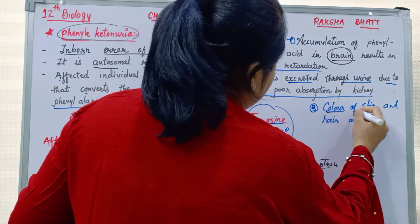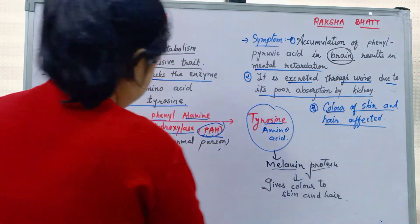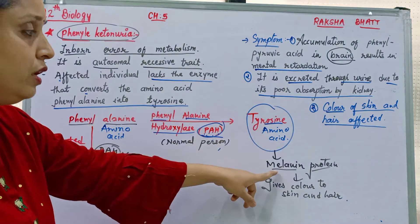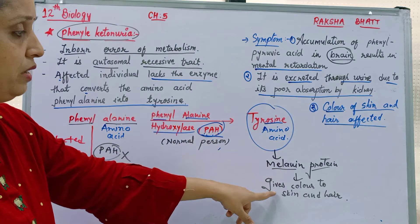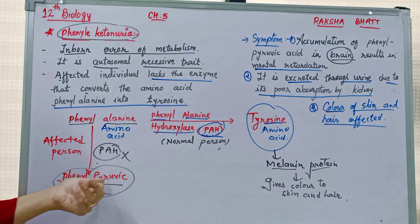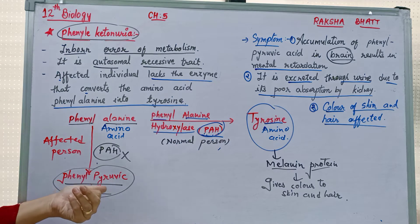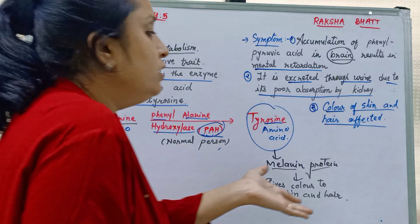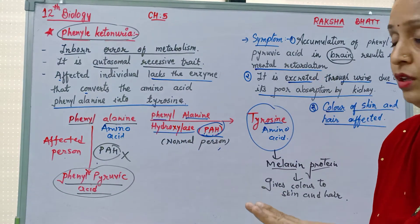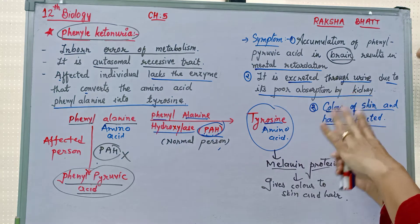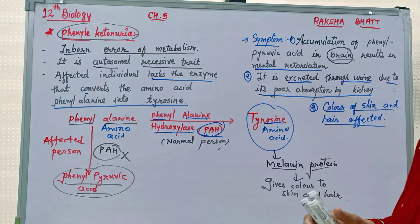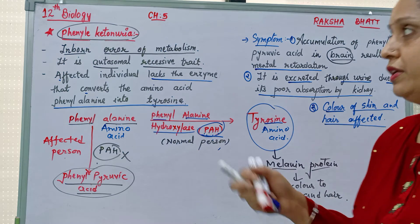Third: the color of skin and hair is affected. If phenylalanine is not converted to tyrosine, then melanin protein cannot be synthesized. If tyrosine is absent, melanin is not synthesized properly, which badly affects our skin color and hair color.